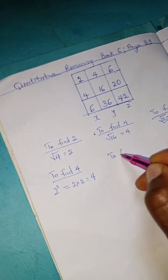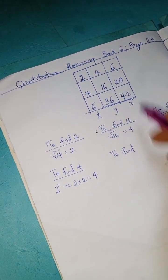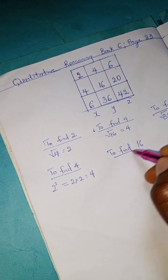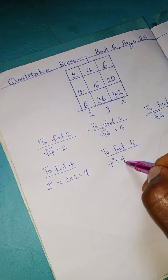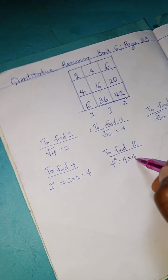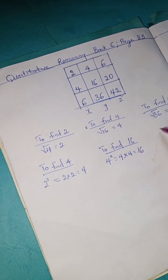So to find 16, we're going to have 4 squared, which is 4 times 4, equals 16.